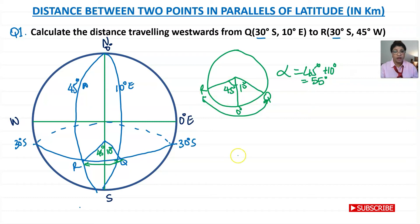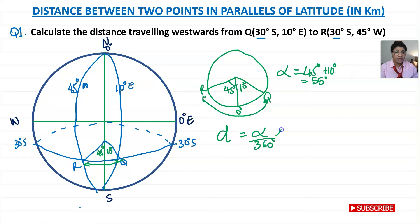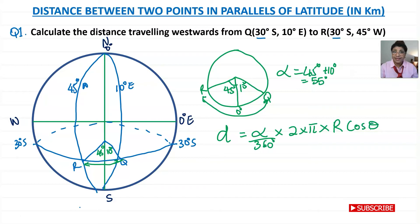We need to find the length of the arc. The formula is: d equals the proportion of the circle, which is that angle alpha divided by 360 degrees, times the full circumference — that is 2 times pi times the radius of the small circle. The radius is given as R cos theta, where R is the radius of the Earth and theta is the latitude, which is 30 degrees.